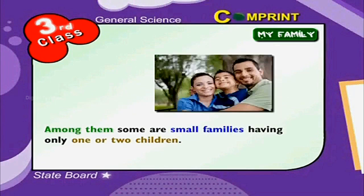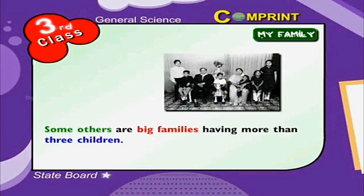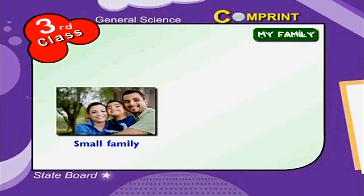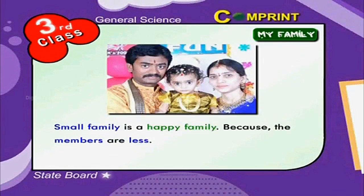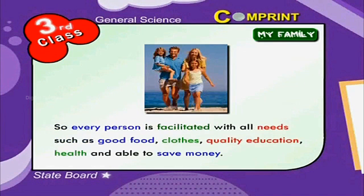Among them, some are small families having only one or two children. Some others are big families having more than three children. Look at the picture — it is a small family and it is a big family. A small family is a happy family because the members are less, so every person is facilitated with all needs.